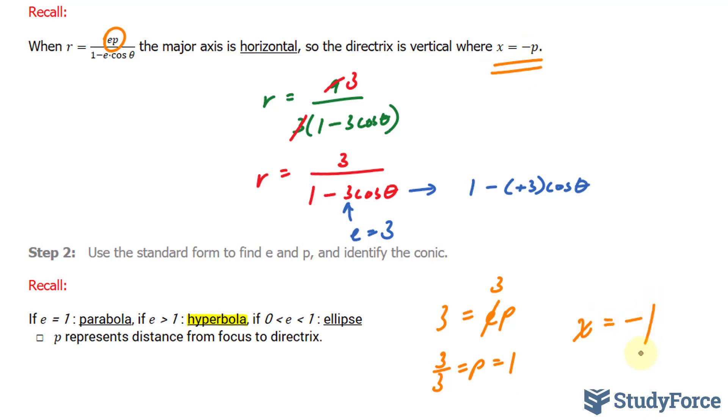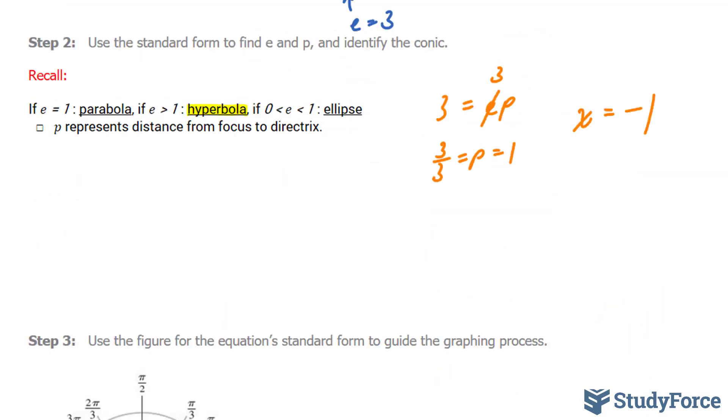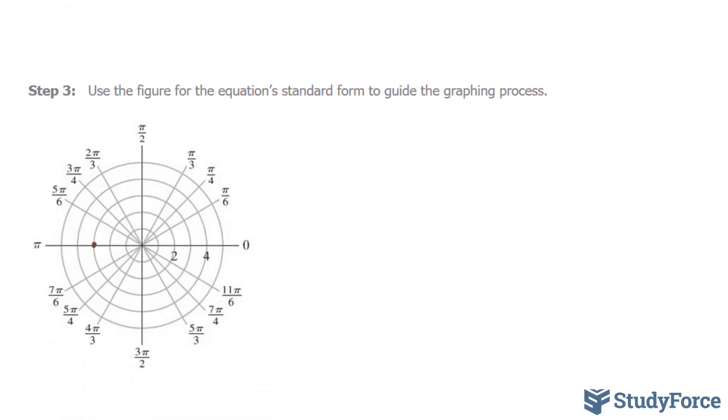We have most of the elements we need to start graphing. In fact, we'll start with our polar plane. We just determined that we're dealing with a hyperbola. This means that we'll have two vertices.